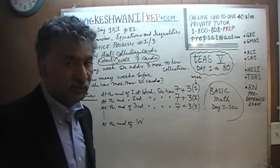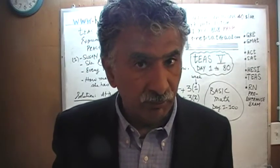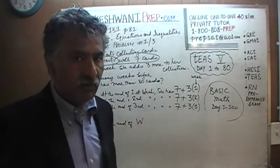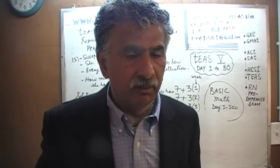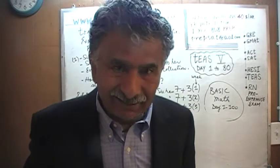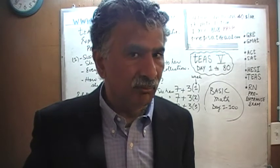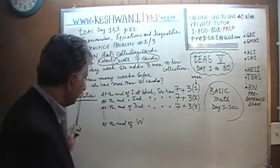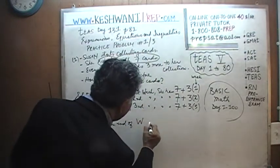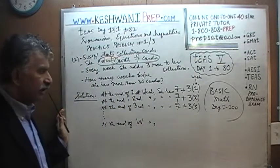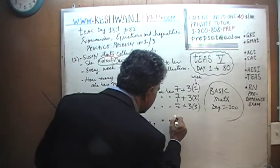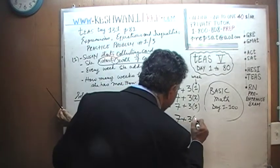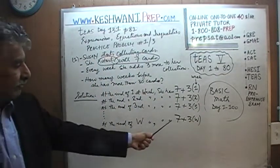People have the tendency to think that everything unknown in algebra must be represented with the letter X — that is not the case. So at the end of W weeks, she will have seven cards she began with plus three times W. That is the right expression: 7 + 3W.